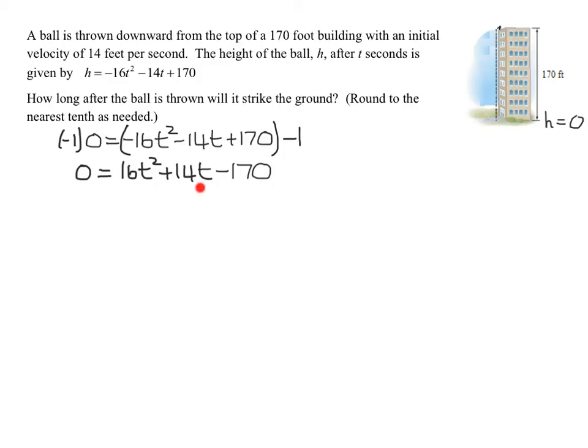I could try and factor this equation, but the numbers are fairly large. And also, when I see round to the nearest tenth as needed, that's an indication that it won't factor. So I'm going to just go straight to the quadratic formula that says t equals negative b plus or minus the square root of b squared minus 4ac all divided by 2a. And remember, a is the coefficient of the t squared, b is the coefficient of the t, and c is the constant. So a is 16, b is 14, and c is negative 170.